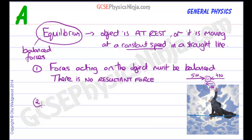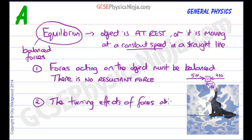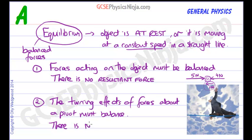The second condition needed for equilibrium — such as a beam balanced on a pivot — is that the turning effects of forces about a pivot must also balance. In physics notation, we say there is no resultant moment. Remember, a moment is the turning effect of a force.